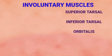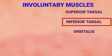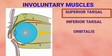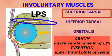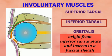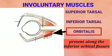Coming to the involuntary smooth muscles — the superior tarsal, inferior tarsal, and orbitalis. The superior tarsal muscle is a modification of the intermediate lamella of the levator palpebrae superioris, attached to the upper margin of the superior tarsal plate. The inferior tarsal muscle is attached to the inferior tarsal plate of the lower eyelid via its fascial sheath. The orbitalis muscle is said to be stretched along the inferior orbital fissure, and not much is known about its function.